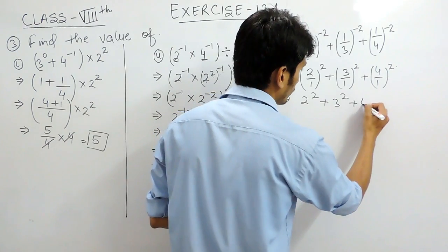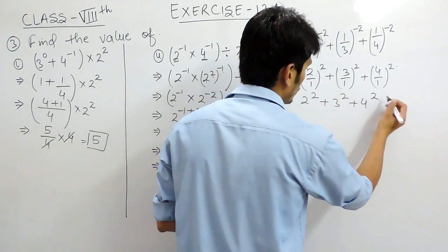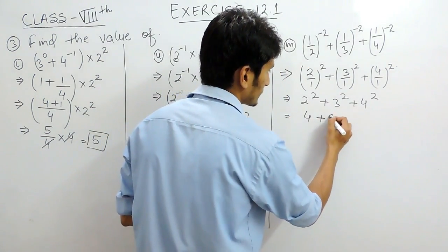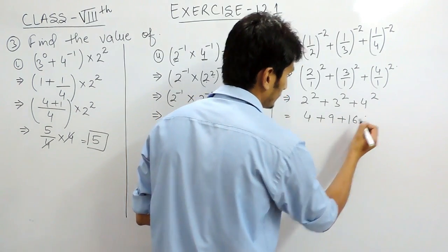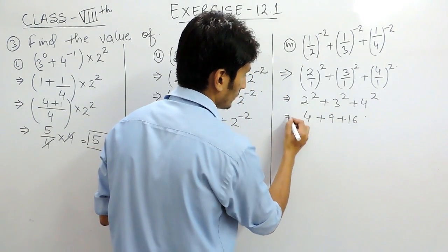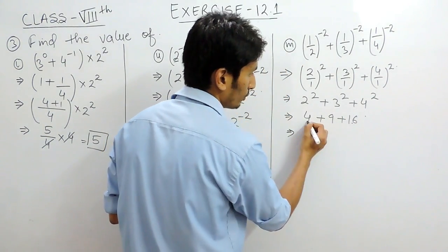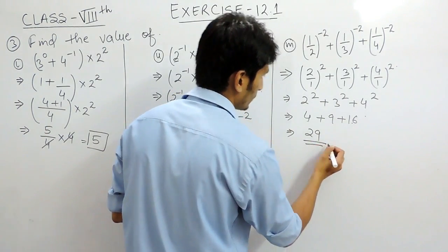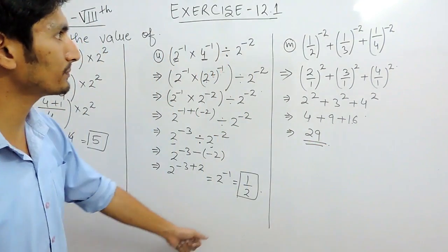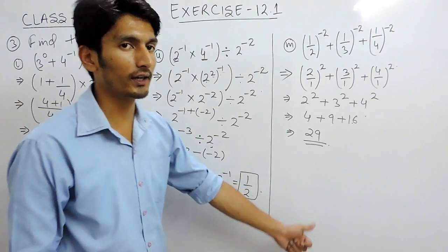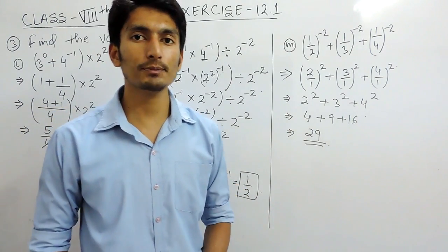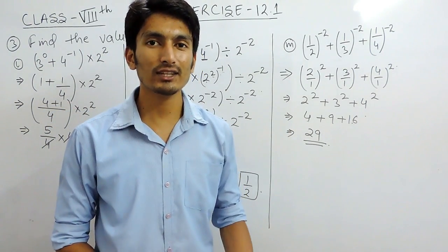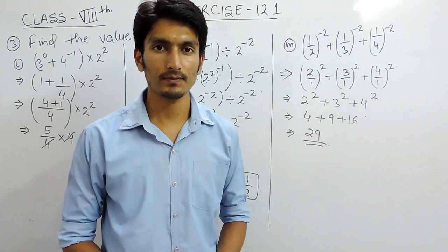This simplifies to 2 raised to power 2 plus 3 raised to power 2 plus 4 raised to power 2, which is 4 plus 9 plus 16. So 16 plus 4 is 20, plus 9 is 29. That is the answer for this part. In the next video we will solve the remaining parts. Thank you.